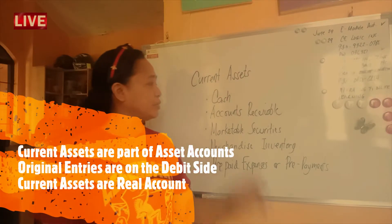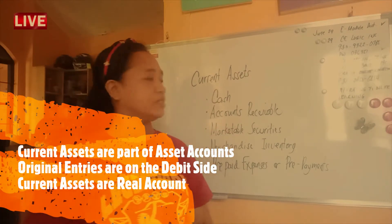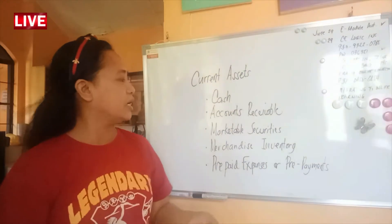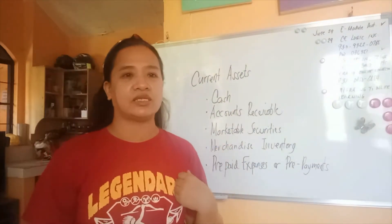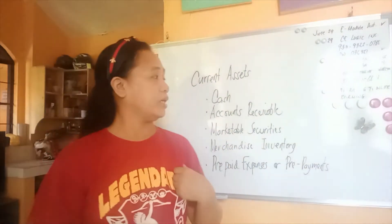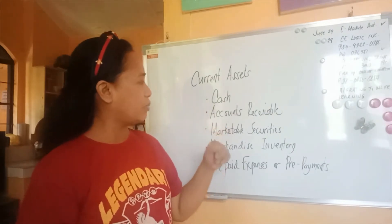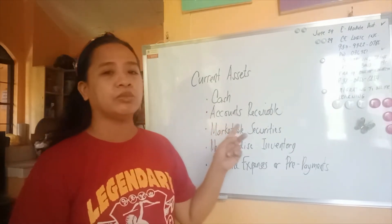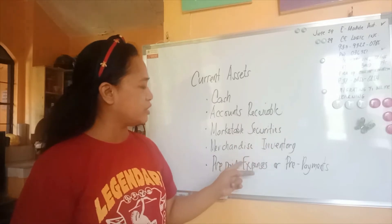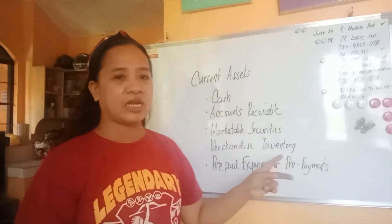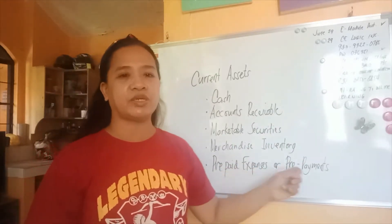Good morning. Our topic for today is more on current assets. As you can see, there are 5 important accounts when you say current assets: cash, accounts receivable, marketable securities, merchandise inventory, and the last one is prepaid expenses or prepayments.